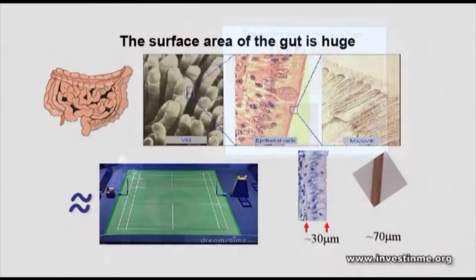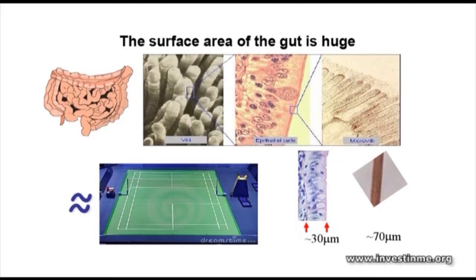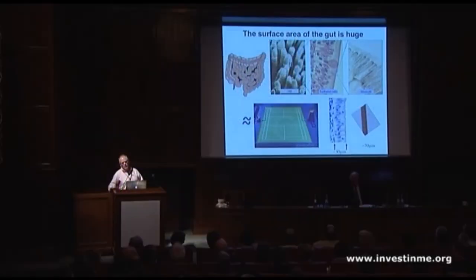Because of these invaginations — these villi that make up the intestine — it gives the gut an incredible surface area. Current estimates put it at something like the size of a badminton court. And yet it's very, very thin — about 30 microns, which is about half the width of a human hair. So although it's a vast surface area, it's very thin and could be considered fragile.